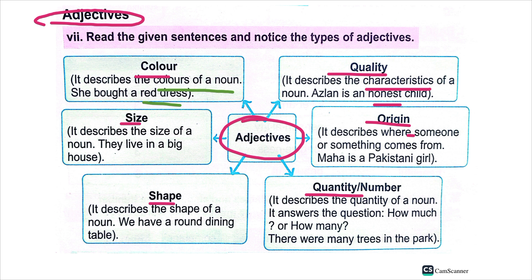Adjective of origin: these describe where someone or something comes from. For example, 'Maha is a Pakistani girl.' Here 'Pakistani' is the adjective of origin.